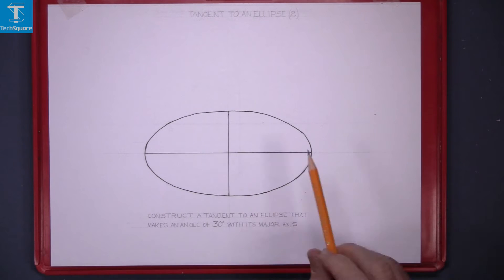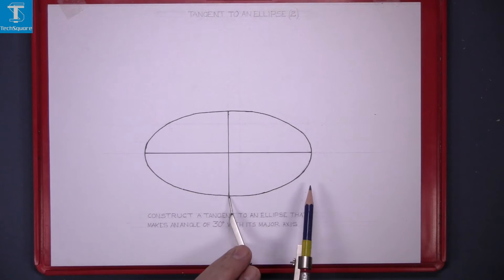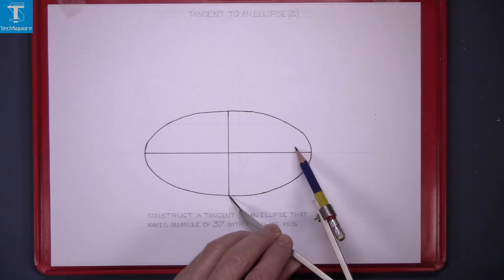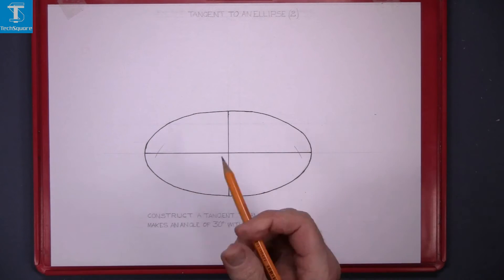First thing, find the focal points. Set the compass to half the major axis, put the point of the compass in the end of the minor axis and draw an arc. That gives you F and F1.